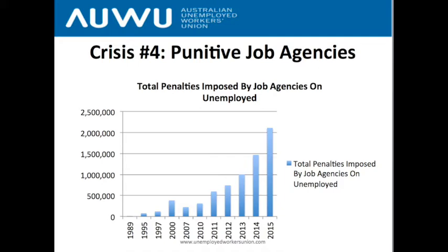The amount of misery and suffering resulting from this punitive system is staggering. What I'll be arguing is that the contracts regulating the system actually encourage job agencies to penalise people — there are perverse incentives built in — which is why under the new Job Active contract introduced in 2015 we see such a huge increase in penalties. It's worth noting that the CDP, the job agency system in remote — mostly Aboriginal — areas, is where the most penalties occur.